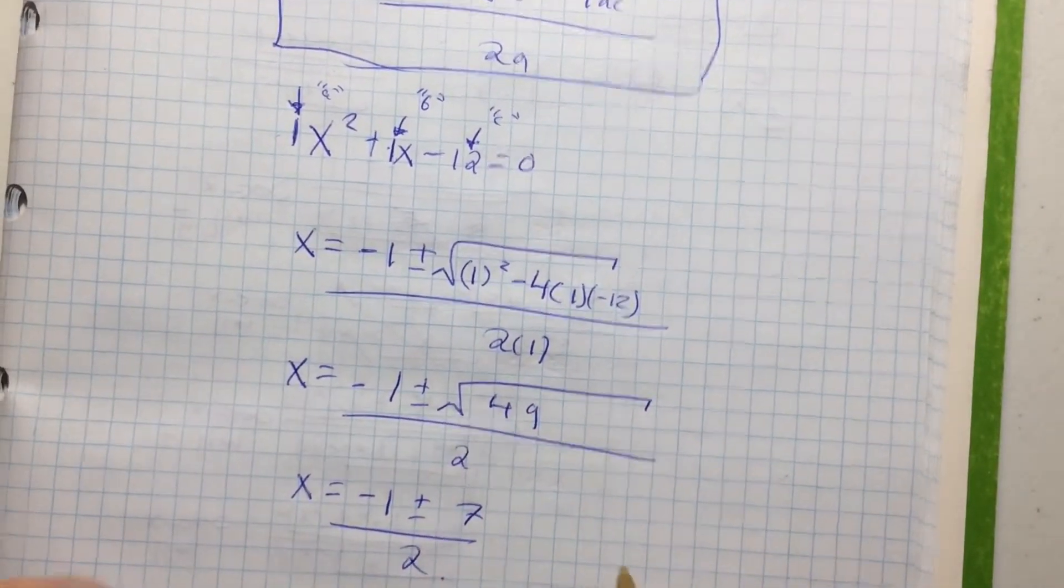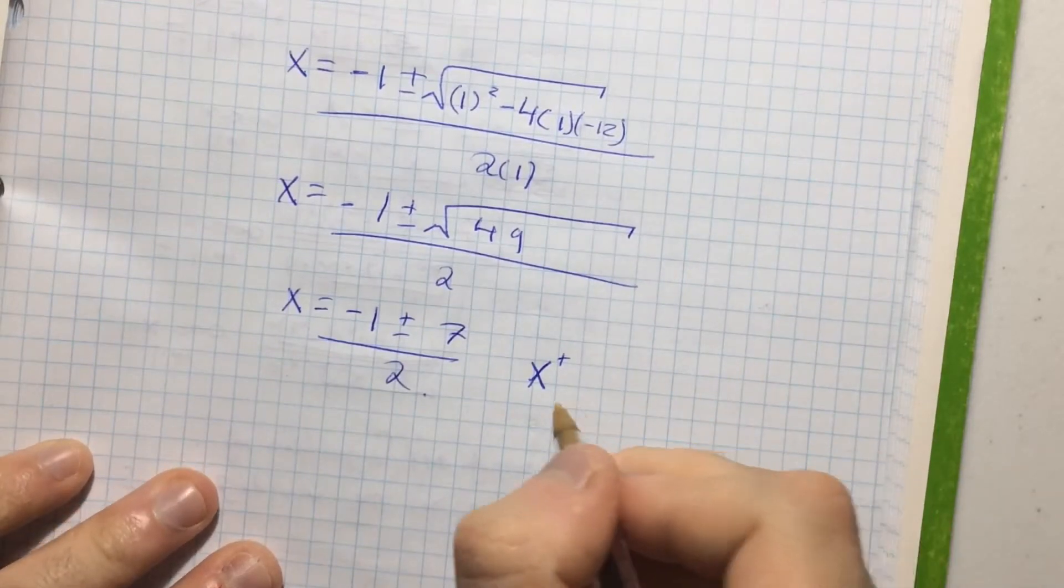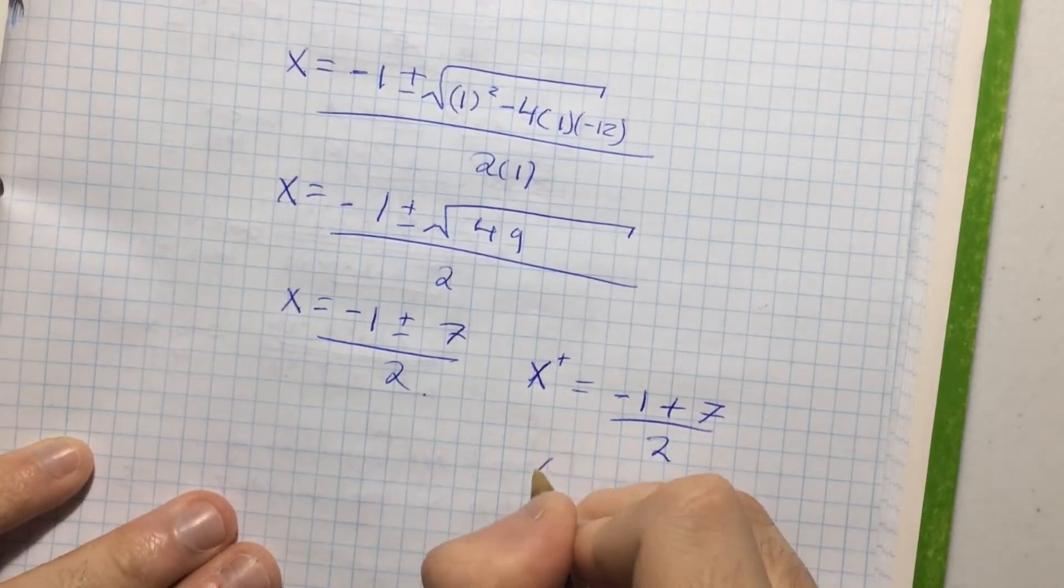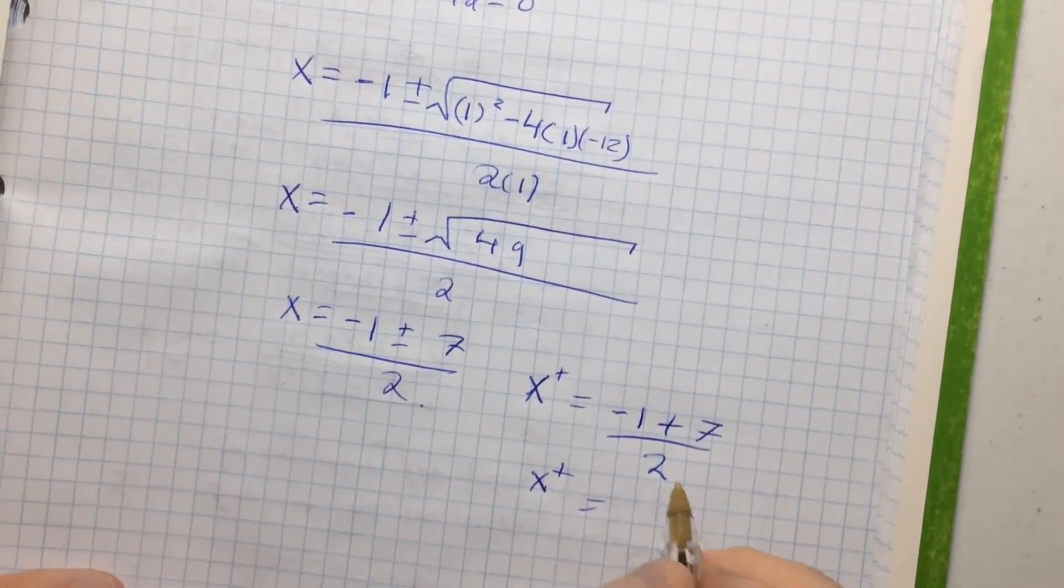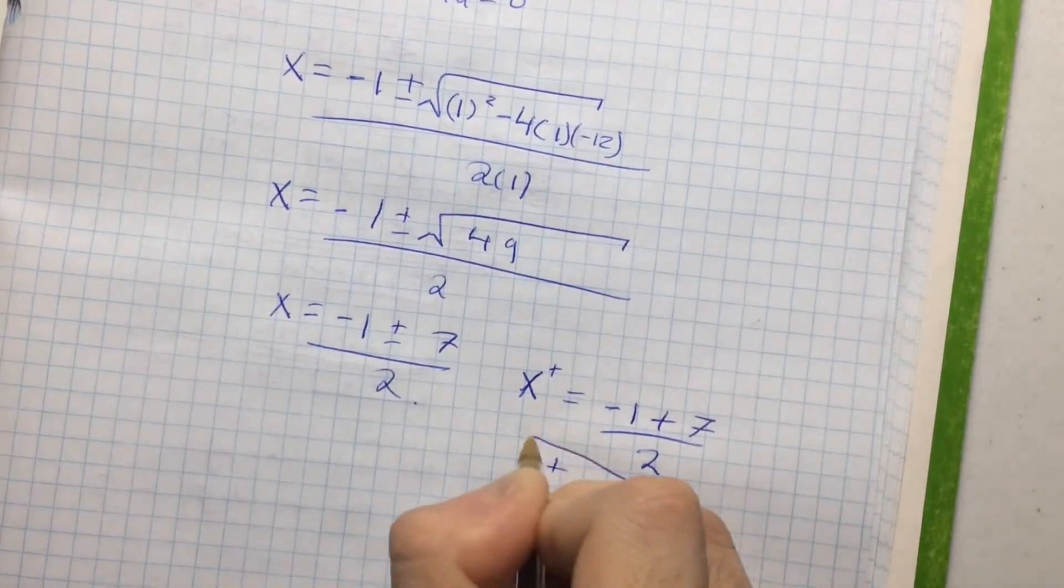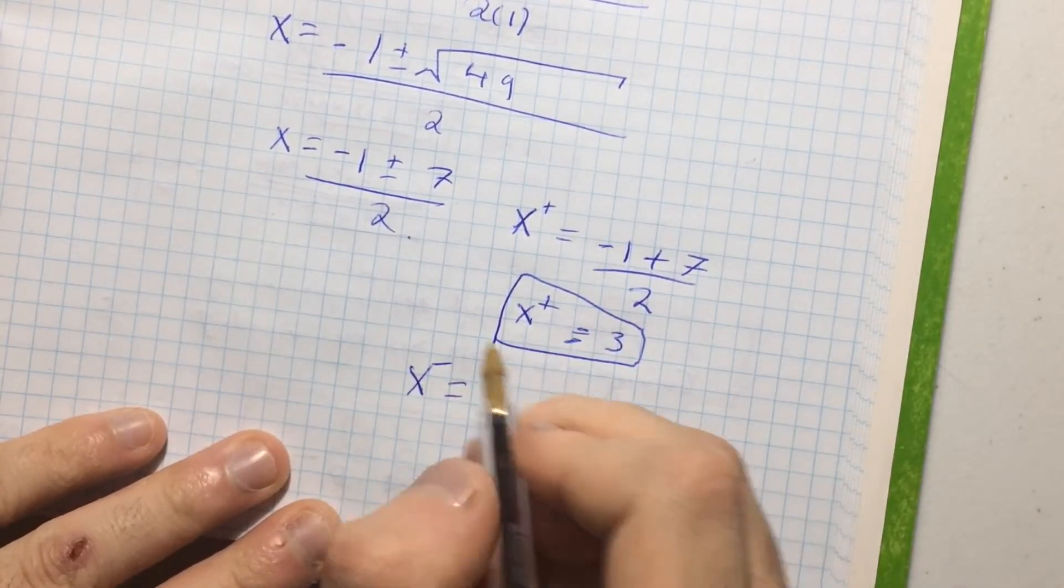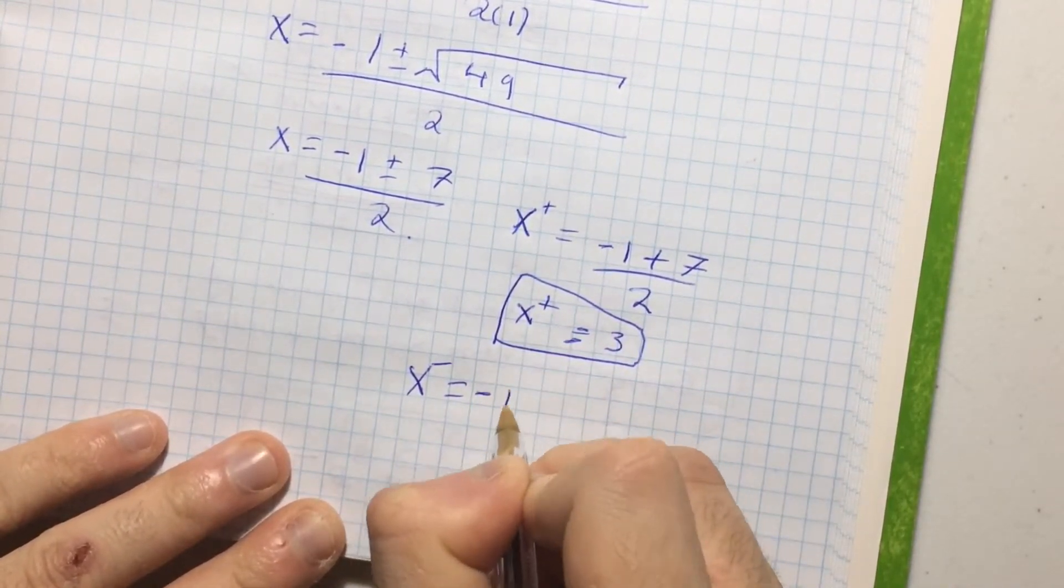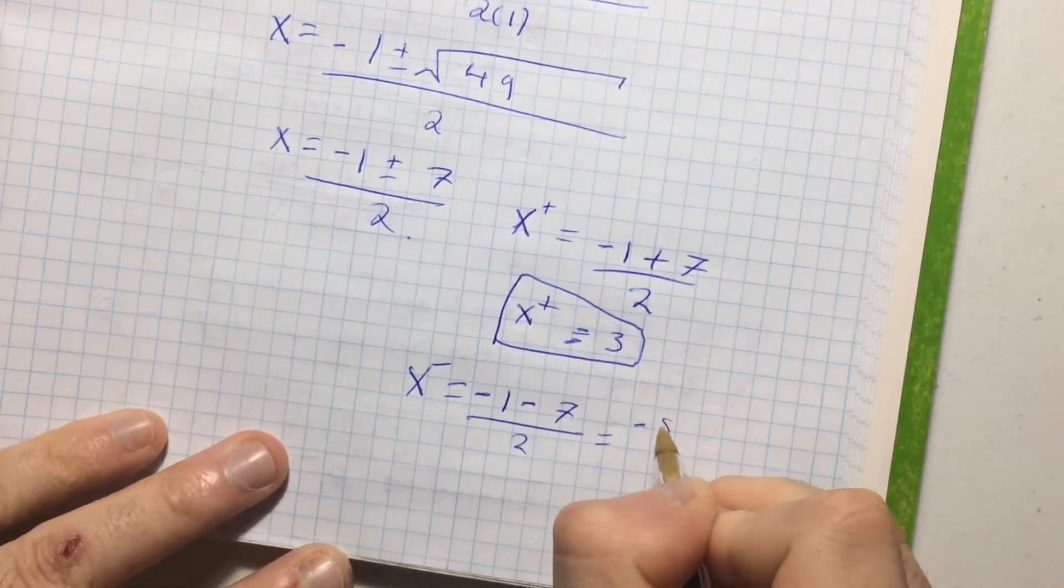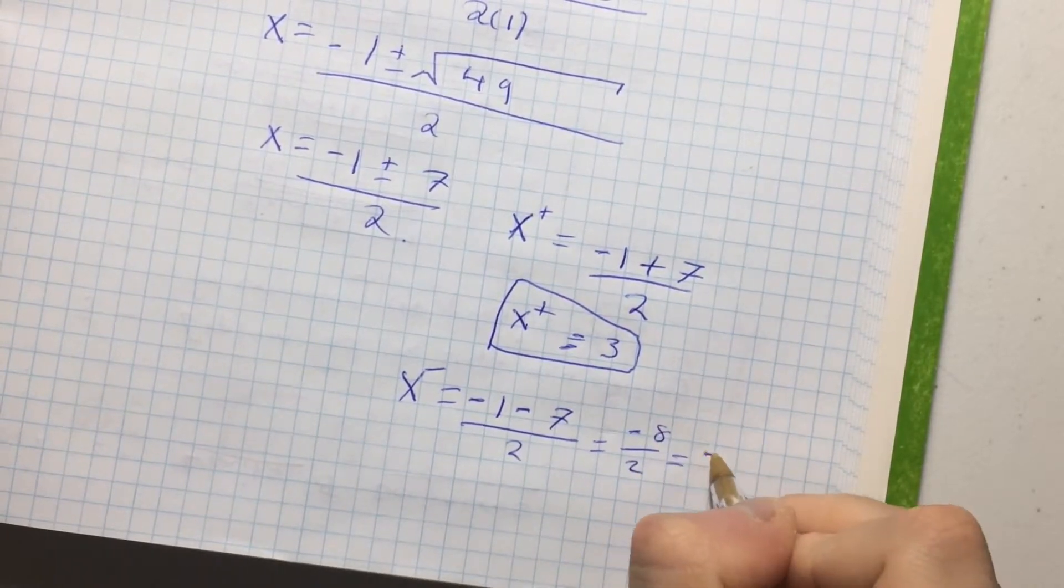So now we can say that the positive value of x, so I'm going to write x subscript plus is equal to negative 1 plus 7 over 2 and that means that x plus is equal to negative 1 plus 7 is 6 divided by 2 and 6 divided by 2 is 3. Or, x can be x subscript negative and that means that x is equal to negative 1 minus 7 over 2, which is just equal to negative 8 divided by 2, which is just equal to, well negative 4 times 2 is minus 8, so this is minus 4.